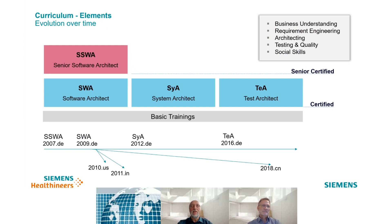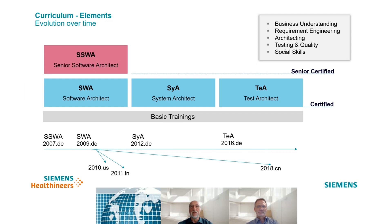Here you see the elements of the curriculum for software, system, and test architects. It all started in 2006 with the development of the senior software architect program. Subsequently, the software, system, and test architect programs were developed, always based on the already existing preceding programs. Over time the software architect program was localized into different countries due to the high number of participants. All these programs have content related to core topics including business understanding, requirements engineering, architecting, testing and quality, and social skills. Social skills is very important because all architects have to lead and motivate teams without formal power. For software architects we support the career paths from software architect to senior software architect, where seniors are usually active in large complex projects.